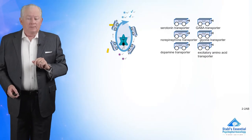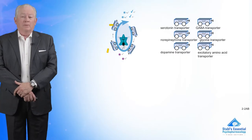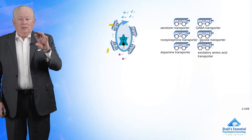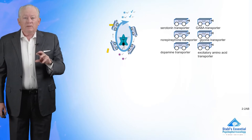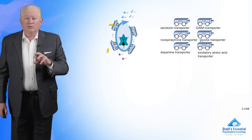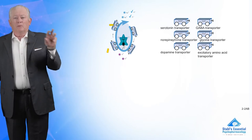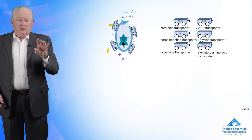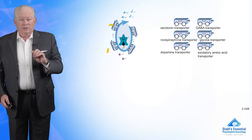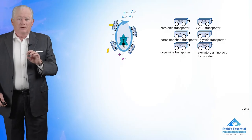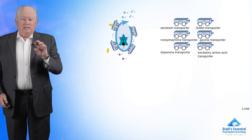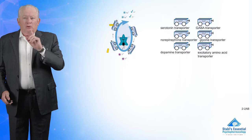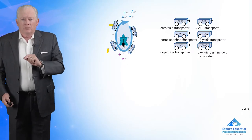The serotonin reuptake pump is located on the presynaptic neuron on the axon terminal. There's also a pump for norepinephrine and one for dopamine. You'll sometimes see SERT (S-E-R-T) for the serotonin transporter, NET for the norepinephrine transporter, and DAT for the dopamine transporter. There's also a GABA transporter, a glycine transporter, and an excitatory amino acid transporter like glutamate.